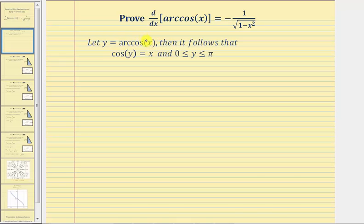Notice how here x would be the cosine function value and y would be the angle. Then it follows that cosine y equals x, where the angle y would be on the closed interval from zero to pi.